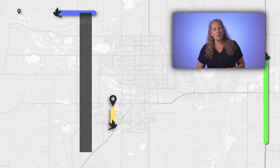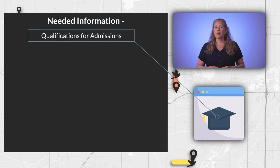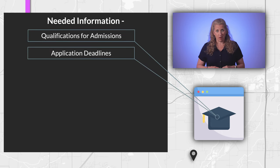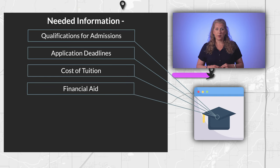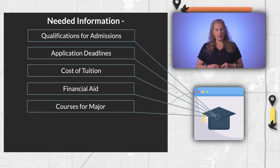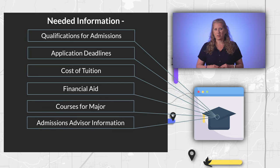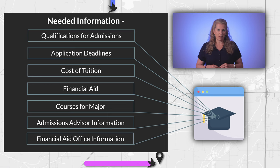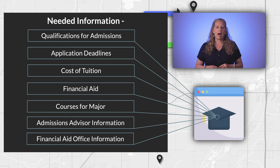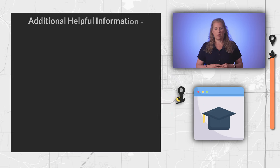Step 1: Create a list of information you want to collect. The list can include qualifications for admissions, application deadlines, the cost of attending the school, financial aid available based on your experiences and qualifications, the courses necessary for your academic major, contact information for the admissions counselor assigned to your high school, and contact information for the financial aid office. You can also have items that are secondary to your choice that you can search while on the website.